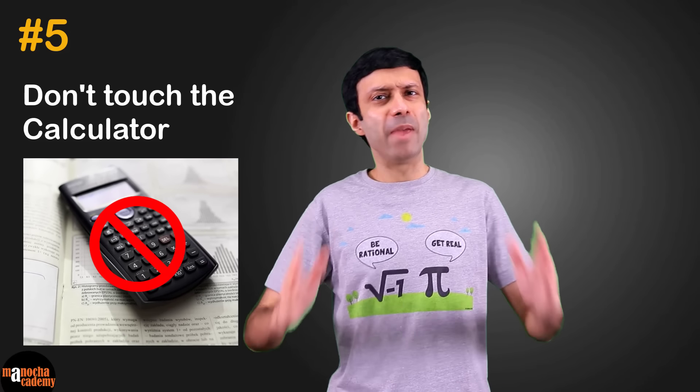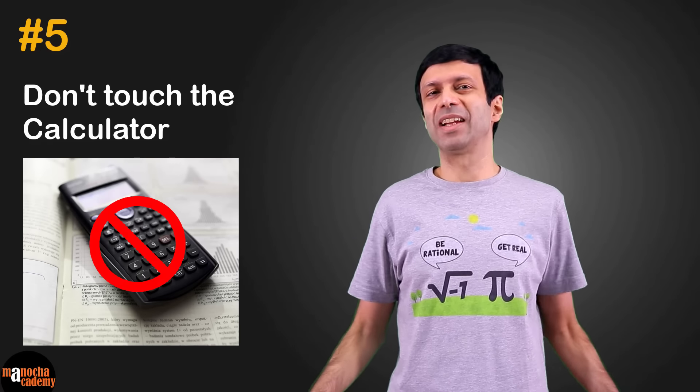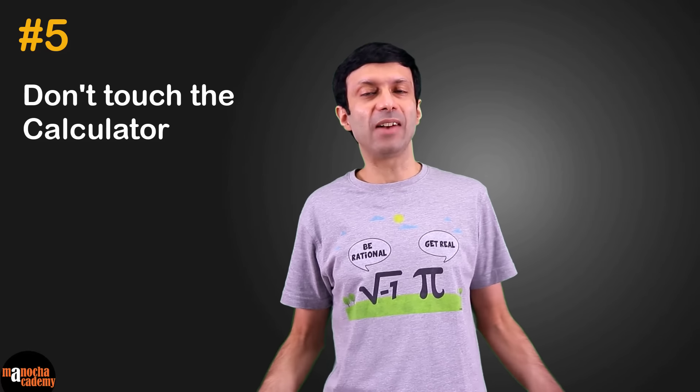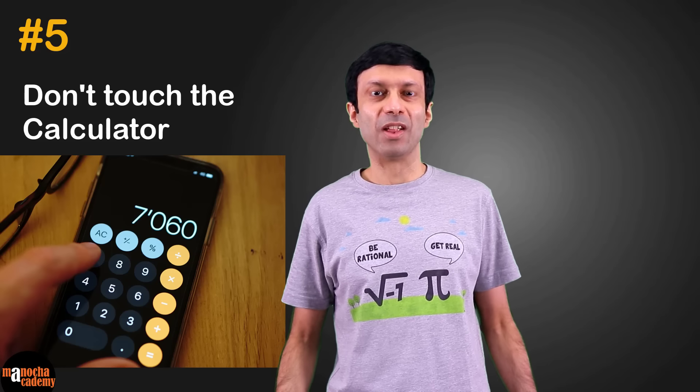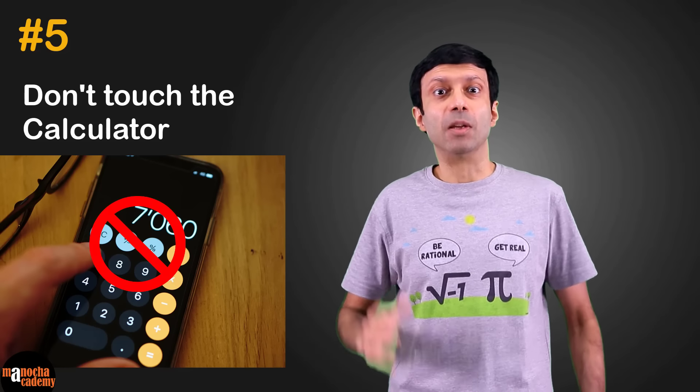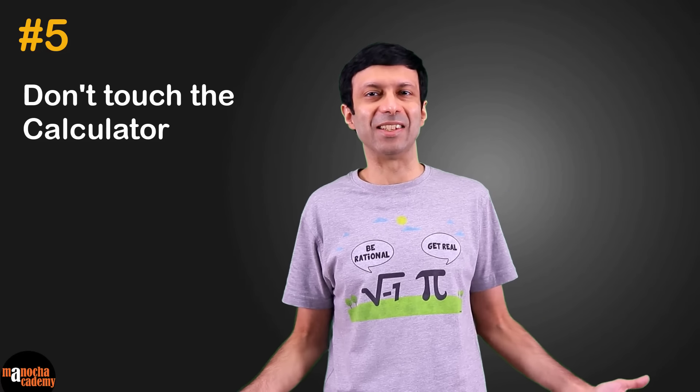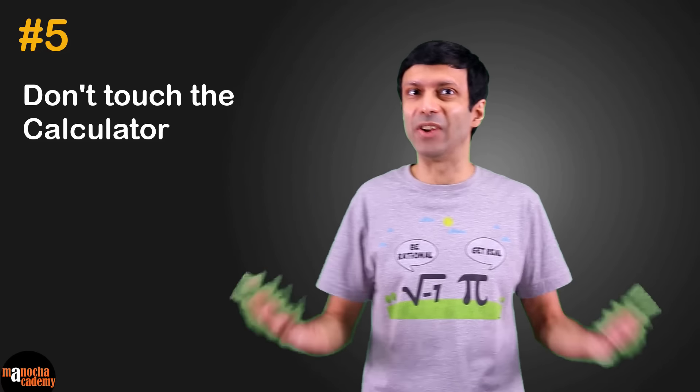Tip number five, don't touch the calculator. Make a promise or your new year resolution not to use the calculator. These days the calculator app is there on the smartphone, remove it from the home screen, don't use it. The more you practice and do calculations the faster you'll get at it and your speed will increase. This will help you complete your exam in time. Learn calculation tricks from your teachers and practice them while solving sums.